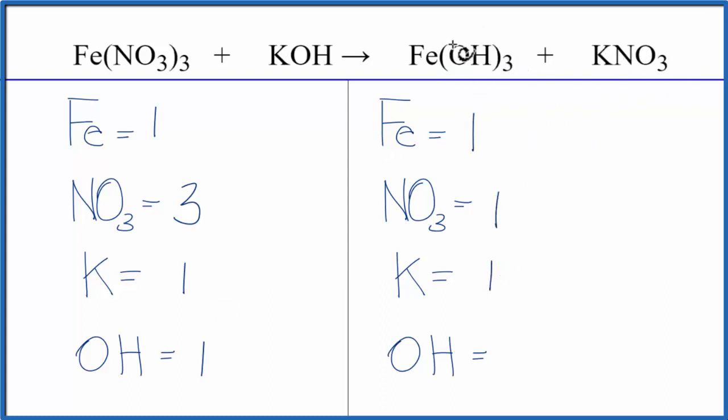Well, it looks like we could balance the nitrates by putting a 3 in front of the KNO3. So we have one times three, that gives us three potassiums, but three applies to everything. So the one nitrate times the three gives us three nitrates. We've balanced the nitrates. Potassiums are off and the hydroxides are off.